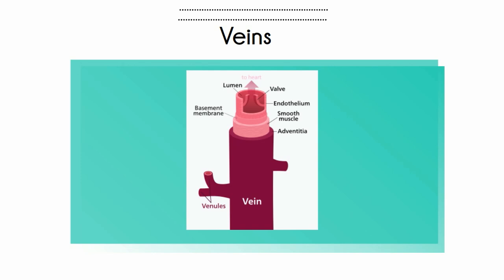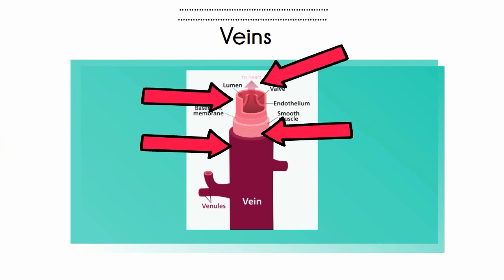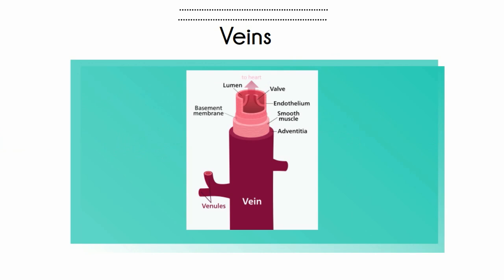A vein has three layers: connective tissue, smooth muscle — though it is not as thick as an artery — and a thin layer of endothelial cells. Veins have valves to help prevent the flow of blood backwards. Veins are not as flexible as arteries, nor is the muscular middle layer as thick.